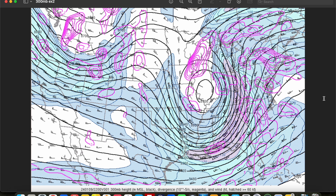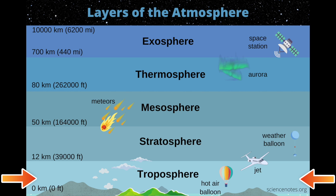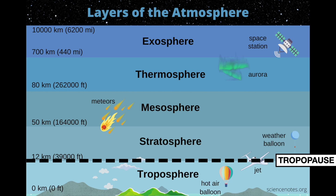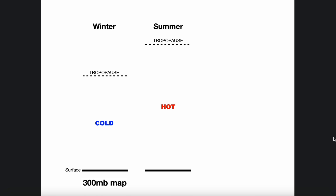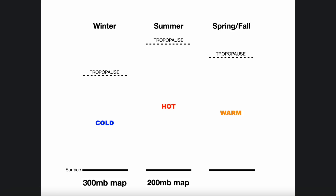Now you might be wondering why we're talking about three different levels of the atmosphere in this video. Basically, when we're analyzing these maps, we're analyzing the conditions in the upper troposphere, the part of the atmosphere in which our weather occurs. The issue is that the height of the tropopause, which demarcates the top of the troposphere, changes based on the time of year. As you may know, warm air expands and cold air contracts. So when the atmosphere overall is colder, in other words in the winter, the depth of the troposphere decreases and thus the height of the tropopause is lower, so we want to use the 300 millibar map in winter. During the summer, when the atmosphere overall is warmest, the depth of the troposphere increases and thus the height of the tropopause is higher, so we want to use the 200 millibar map in summer. During those in-between times, in the spring and fall, the 250 millibar map works best.